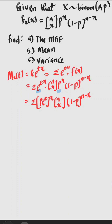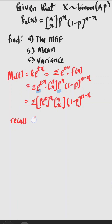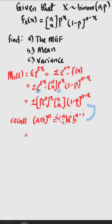Now let me quickly take you through the general rule of the binomial distribution. Recall that if you have (a + b) to the power of n, this can be written as summation of n combination i times a to the power of n minus i. Using the same rule here, a is going to be p·e^t and b is going to be (1 minus p), all to the power of n.